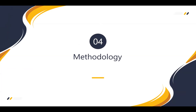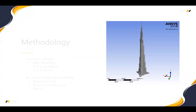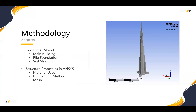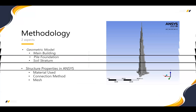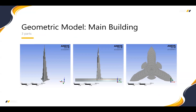Now I'm going to introduce the methodology of our group. Our methodology focuses on two aspects: the geometric model and structural properties in ANSYS. Our model has two main parts: the main building — the tower — and the pile foundation. There is also the soil stratum. You can see the connection between the main building, pile foundation, and soil stratum from the side view.